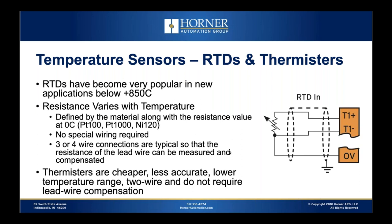Thermistors are another type of temperature sensor where resistance varies with temperature. They're cheaper, less accurate, typically have higher resistance values, and are usually used in environmental temperature ranges, say minus 100 to plus 200°C. Because of their higher resistance, lead wire resistance is more of a round-off error, so no compensation scheme is needed. You often see them in HVAC-type applications.